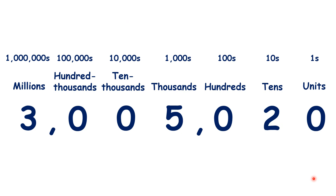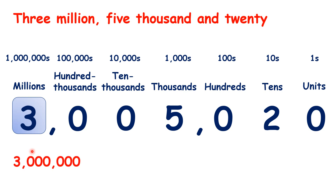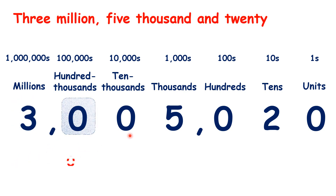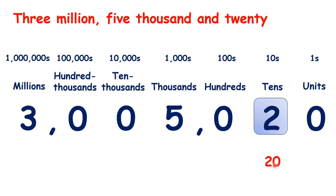How do we say this number? We say 3,000,000, 5,000, and 20. With this number, we have 3,000,000 — we don't have any 100,000s or 10,000s. This 5 stands for 5,000. We don't have any 100s. This 2 stands for 20. And we don't have any units.